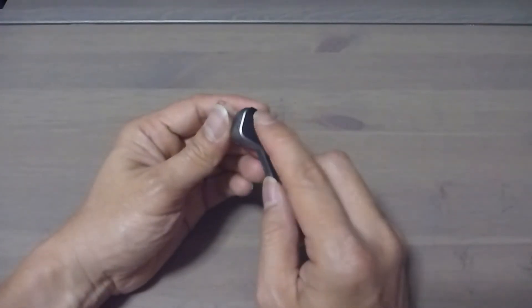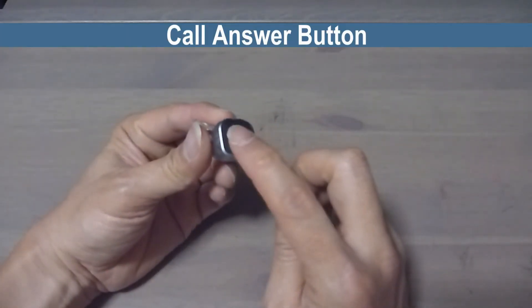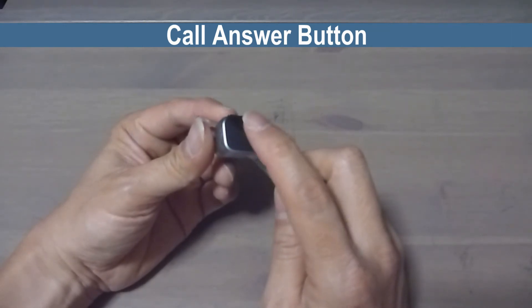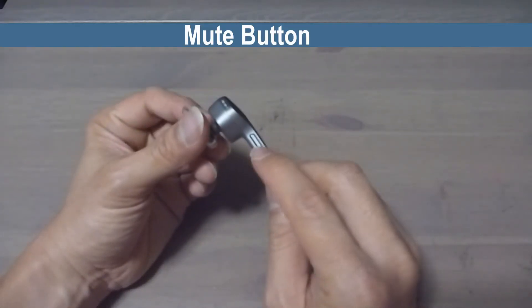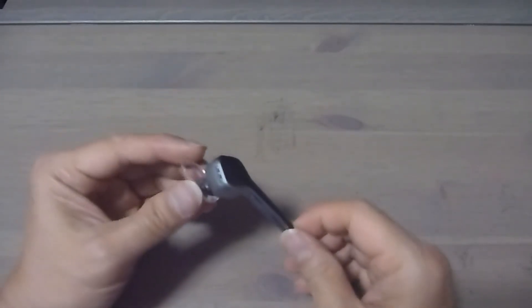To answer calls, simply tap on this part over here to answer or reject any calls. The mute button is right over here. So it's a fairly simple operation for this Plantronics Voyager Edge.